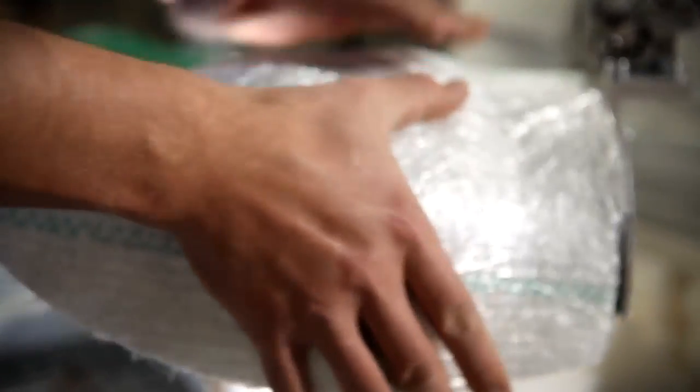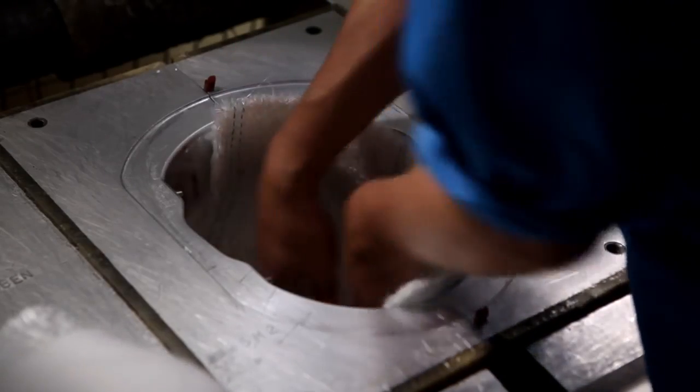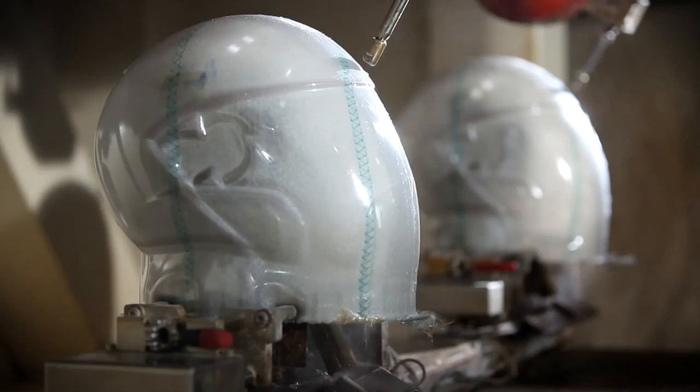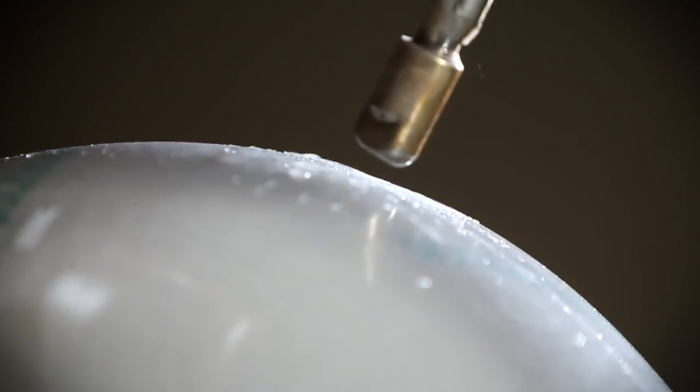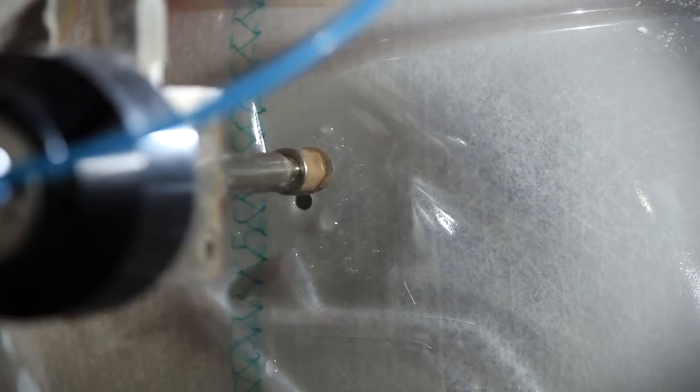Serial production starts with the pressing of the shell, which is the core element of any helmet. A jet of water cuts holes and sections in the helmet shell at a pressure of 3,000 bar. The level of precision here is down to the nearest tenth of a millimetre.